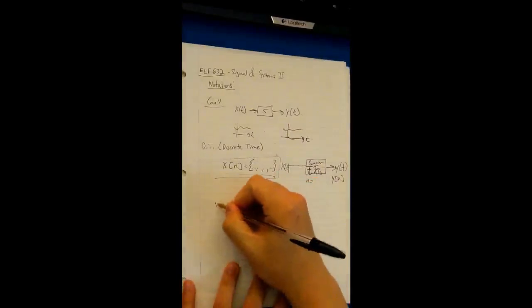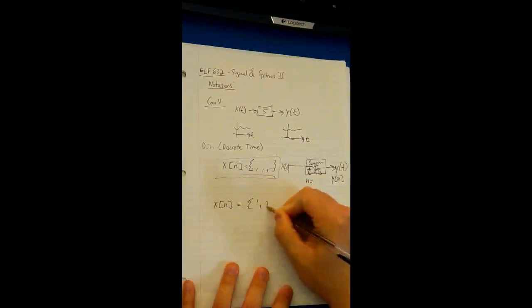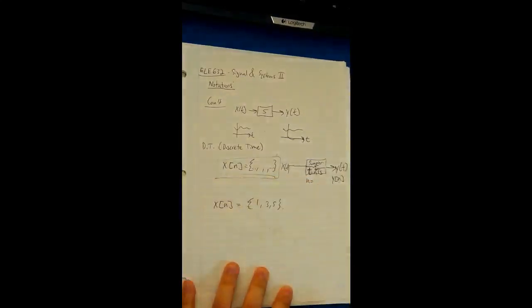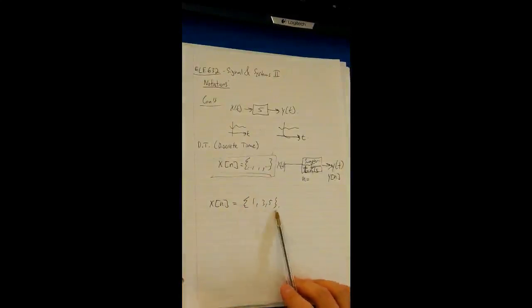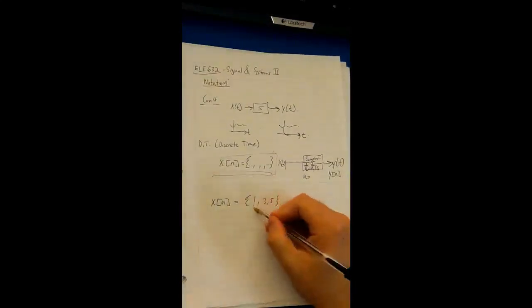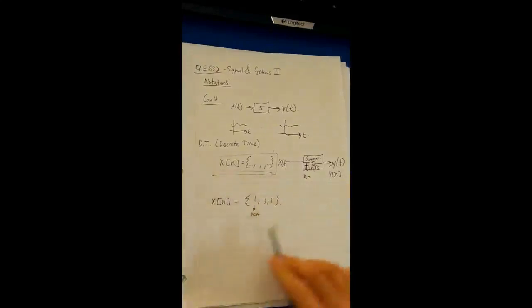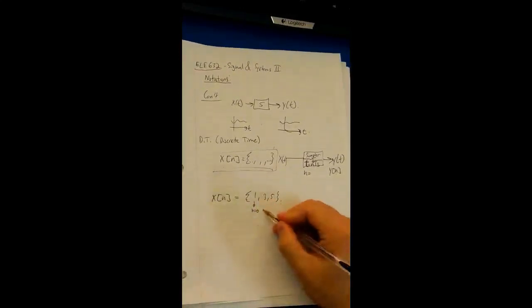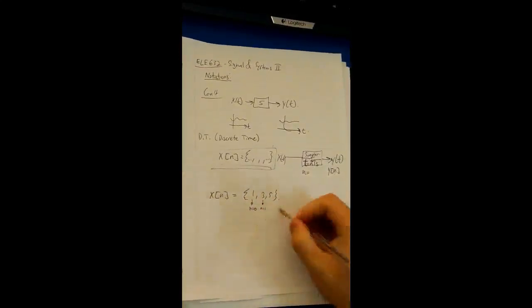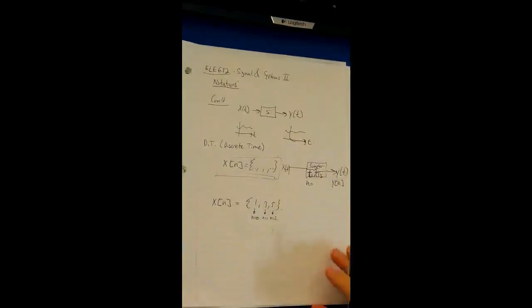For example, if I have X of N is equal to 1, 3, 5, something like that. We know that X of N is described as a set that has three elements, so 1, 3, and 5, and let's say that this element is N equals 0. So at N equals 0, in the beginning, its initial element is 1. X of N is equal to 1. At N equals 1, it equals to 3. And N equals 2 is equal to 5. This is just really basic stuff right now, and this is called a finite set.